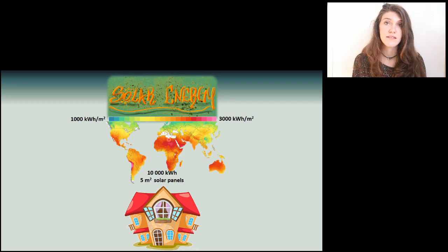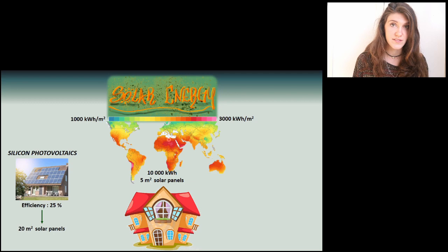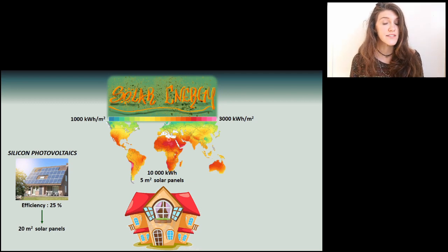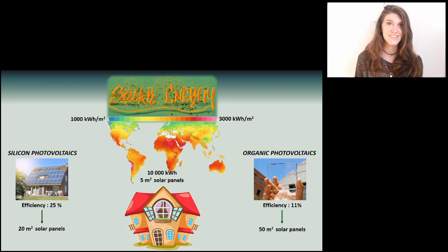That would be true if the efficiency of these solar panels was 100%. That's not the case because the market is nowadays run by silicon photovoltaic systems, which have an efficiency close to what is the theoretical limit, and that's 25%. But recently, a new technology has arised, and this technology are the organic photovoltaic systems.